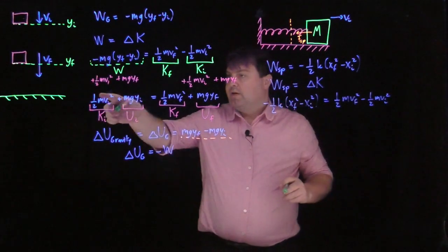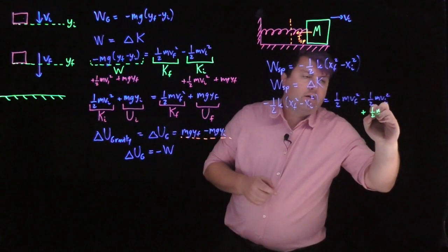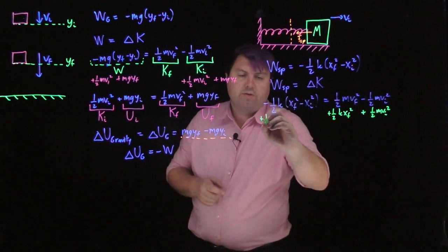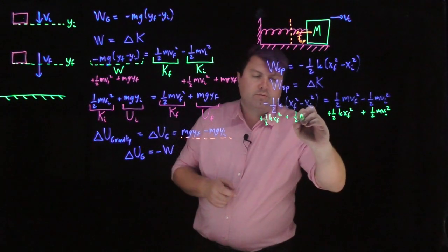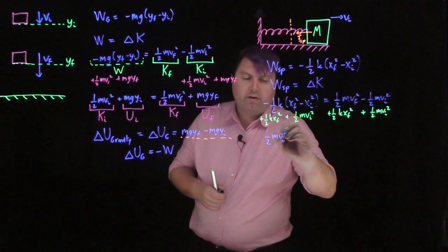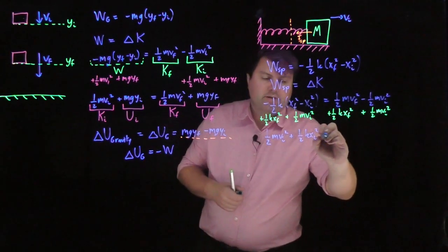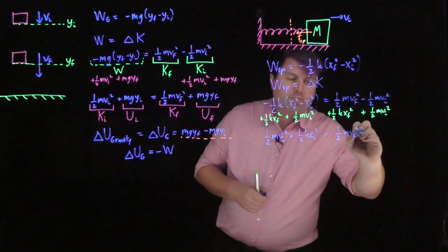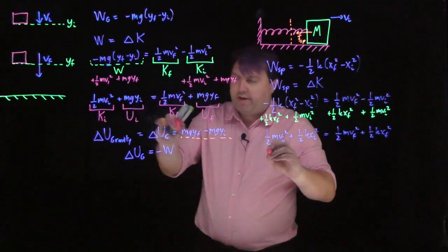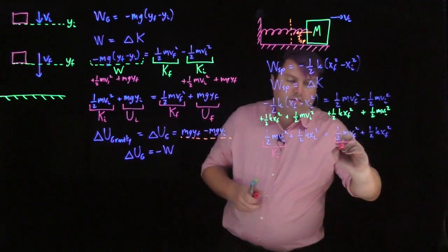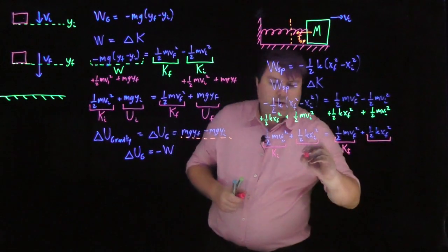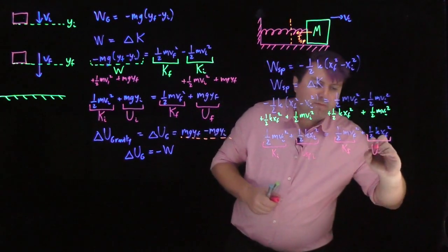We can do the same trick as before: add one half mvi squared and one half k·xf squared to both sides. When we do that, we get on the left side: one half mvi squared plus one half k·xi squared, and that equals one half mvf squared plus one half k·xf squared. This is our initial kinetic energy and this is our final kinetic energy. And the terms one half k·xi squared and one half k·xf squared represent beginning and ending states — these are the spring potential energy initial and the spring potential energy final.